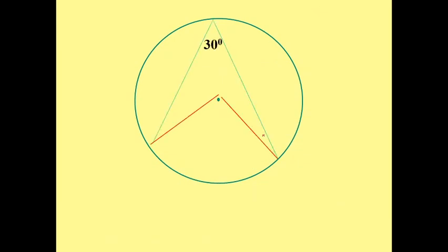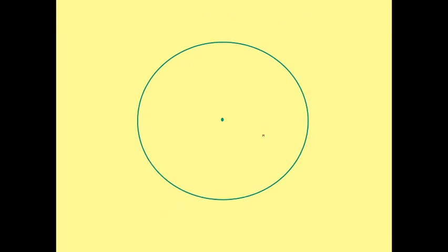Yeah, good. So let's say that one here has 30, that's on the circumference. The other one looks bigger so it's got to be twice the size, so that one here has got to be 60.